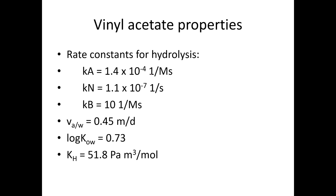The reason we use vinyl acetate as an example is that it has chemical reactions: an acid-catalyzed reaction, a neutral reaction, and a base-catalyzed reaction. The acid-catalyzed rate constant K_A has second-order units; the neutral reaction K_N is first-order; and the base-catalyzed K_B has second-order units. We need to convert all to first-order units. V_AW is 0.45 m/day. Log K_OW for vinyl acetate is only 0.73, so it won't sorb significantly to particles.